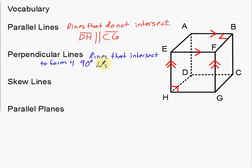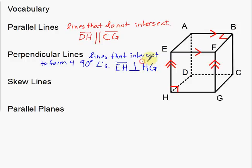Using a little bit more notation: the angle symbol represents angles. Lines that intersect to form four 90 degree angles — being a little bit more formal with our definitions. Let's look at an example: HC and HE are in fact perpendicular. So EH is perpendicular to HG. The perpendicular symbol looks like an upside-down T — that's our perpendicular symbol, just like parallel has its own symbol.